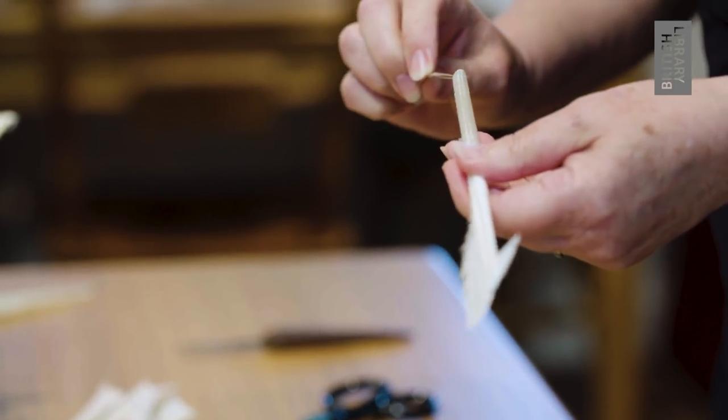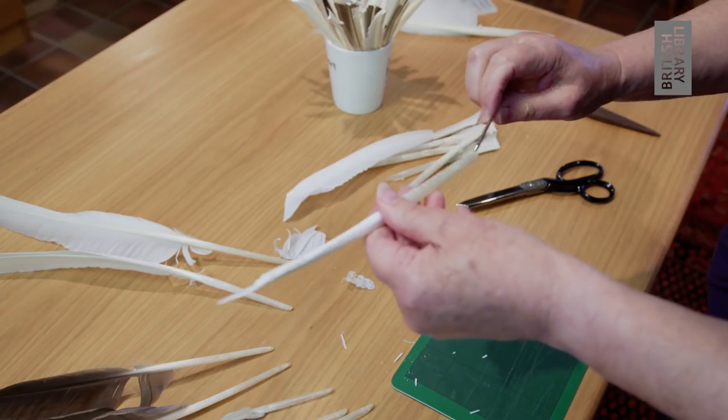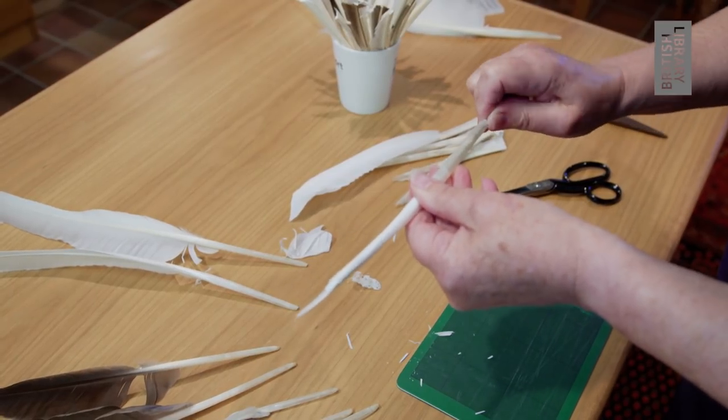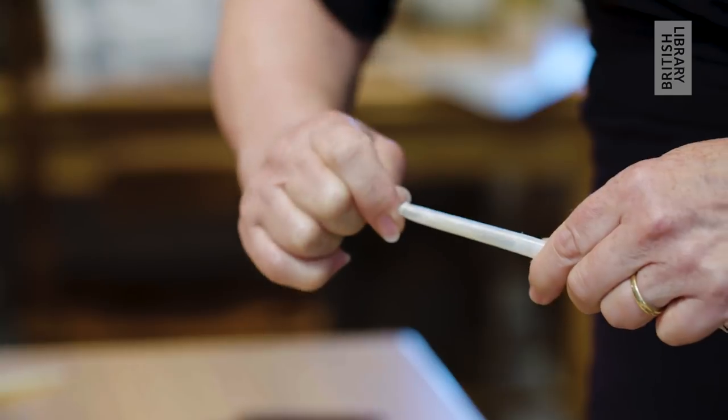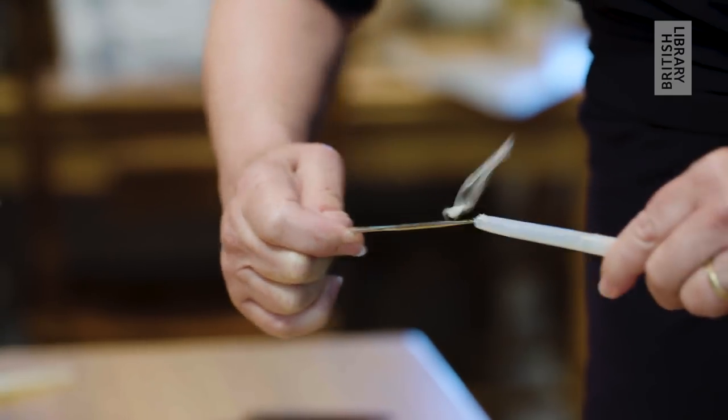The membrane that carries the blood supply to the tip of the feather then needs to be removed, and nowadays we try and pull this out with a crochet hook. It's sometimes quite difficult to get it out.